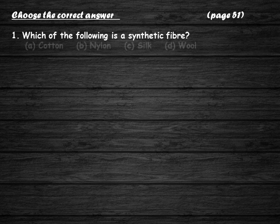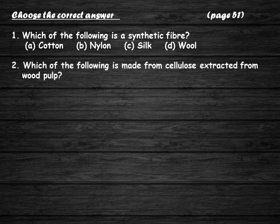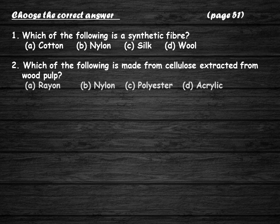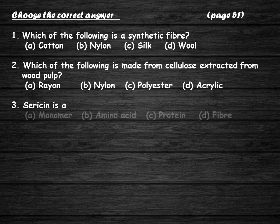Question number one: which of the following is a synthetic fiber — cotton, nylon, silk, or wool? Question two: which of the following is made from cellulose extracted from wood pulp — rayon, nylon, polyester, or acrylic? Question three: sericin is a — monomer, amino acid, protein, or fiber?